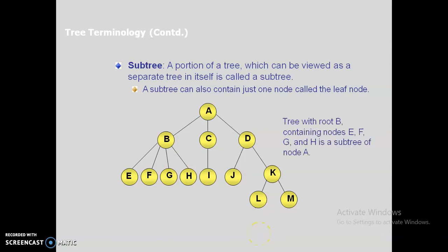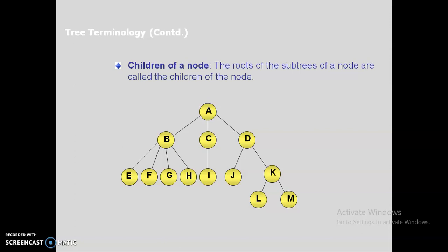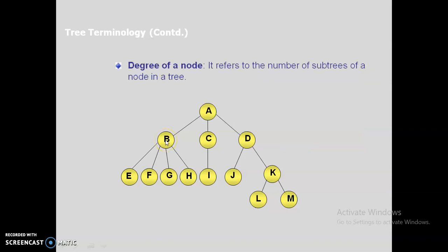The tree with root B contains nodes E, F, G, and H as a subtree of node A. Even a single node B, without any partition, can be called a subtree of A. The roots of the subtrees of a node are called the children of that node — for example, E, F, G, and H are children of node B, and B is the parent of those nodes.